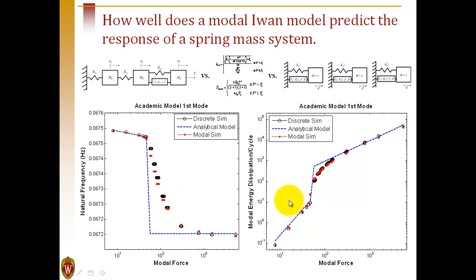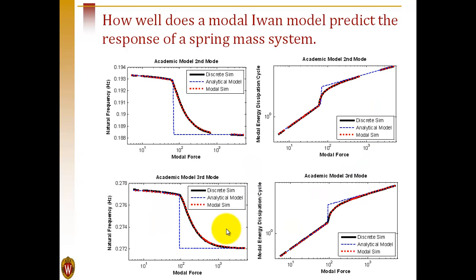The blue line is an analytical model derived in Segalman's paper that describes frequency and dissipation versus amplitude. You can see that the modal model matches the discrete model amazingly well, and that the analytical equations work well in microslip and macroslip, but don't work very well in the transition region as we'd expect. We can also look at modes 2 and 3, and we see similar behavior.